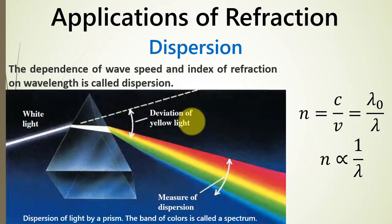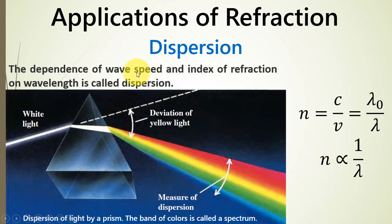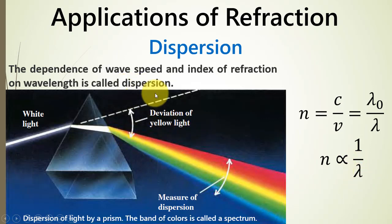In applications of refraction, we are having another phenomenon which we call dispersion. In dispersion, this is the refractive index equation, and we see from here that when the speed of a wave is dependent on the index of refraction and on the wavelength of incident light, this phenomenon is called dispersion. When different wavelengths travel at different speeds in a medium, this phenomenon will be termed as dispersion.